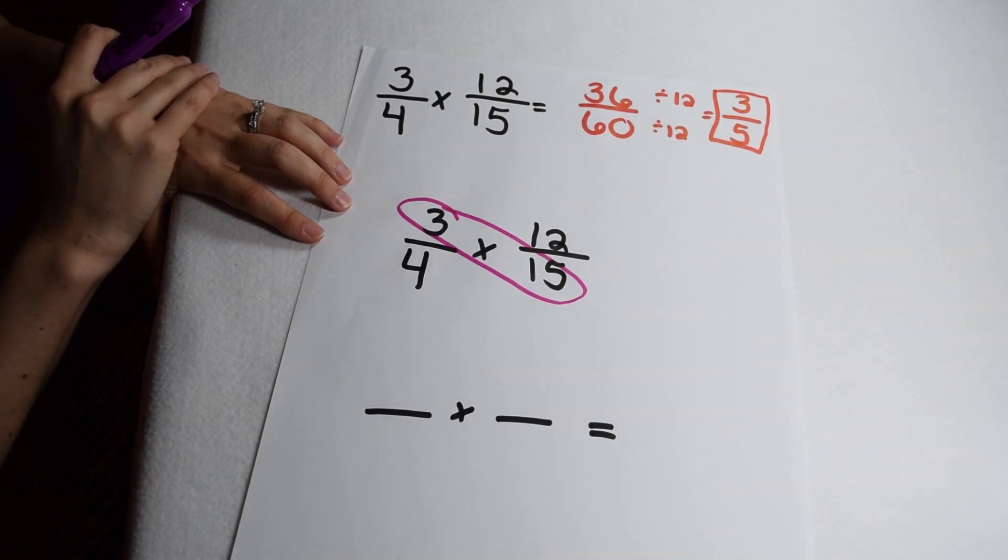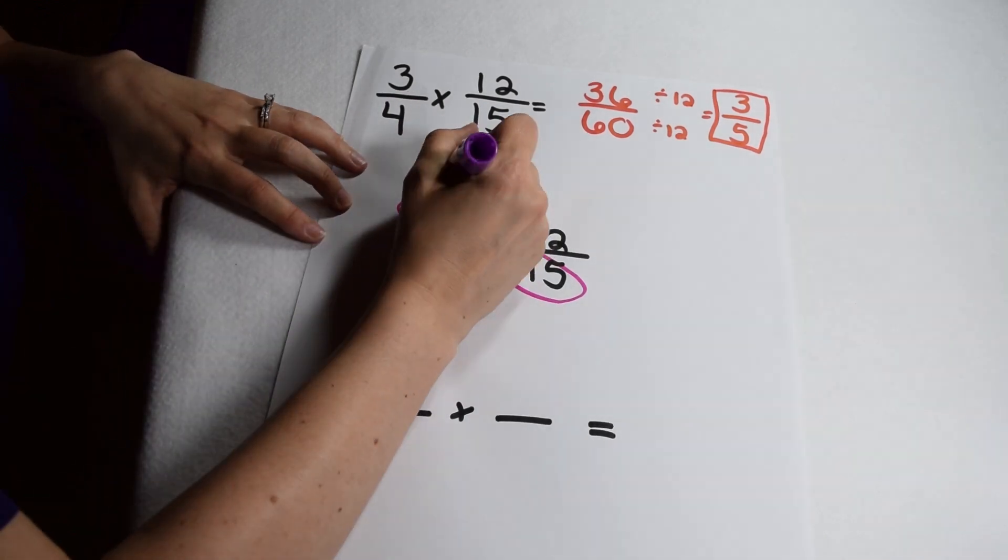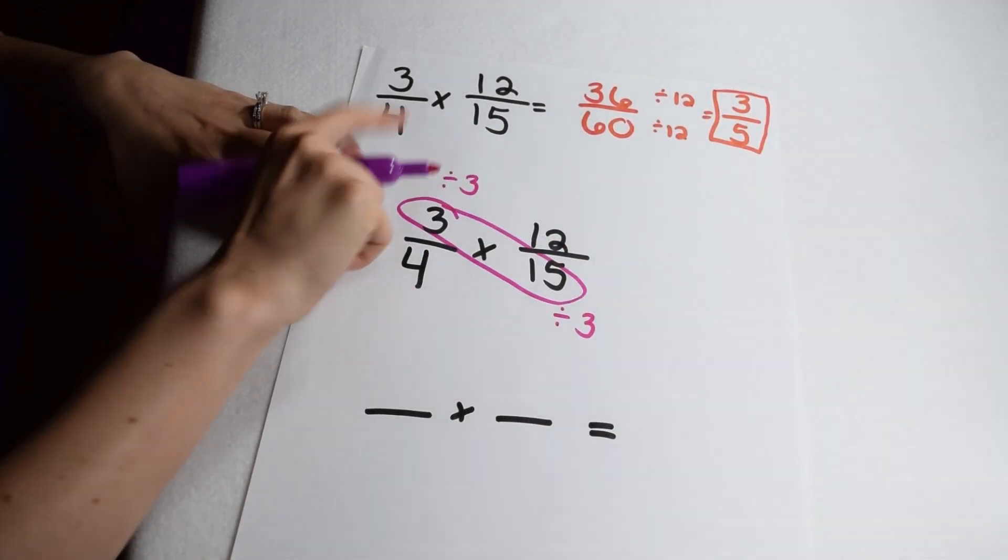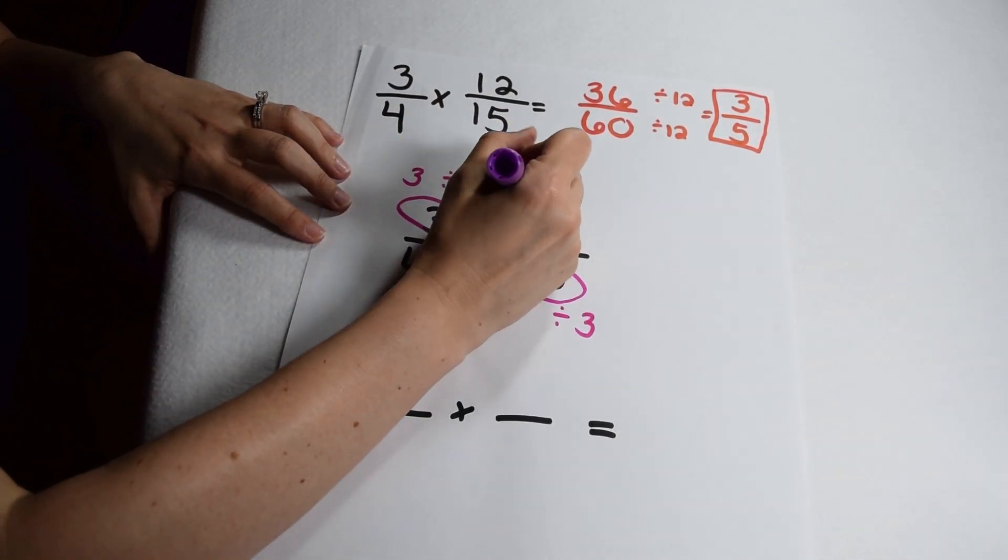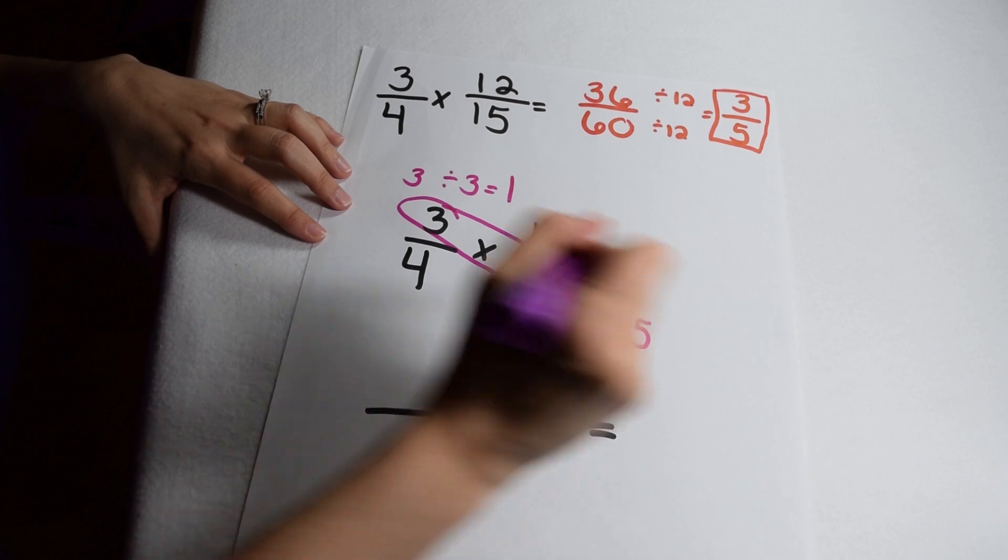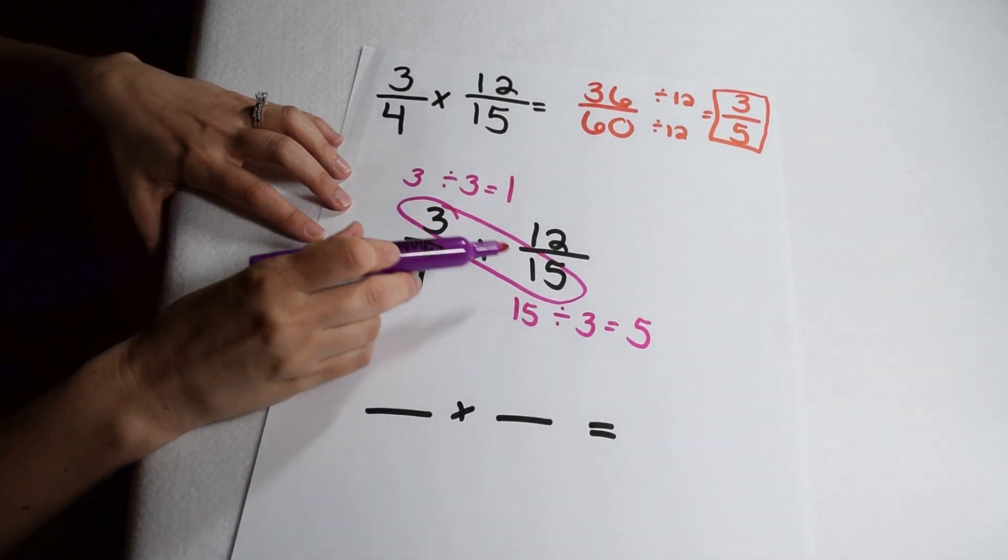Let's start by looking at 3 and 15. Factors of 3 include 1 and 3. Factors of 15 include 1, 3, 5, and 15. Since they both have a common factor of 3, I can divide both the 3 by 3 and get 1 and the 15 by 3 and get 5.